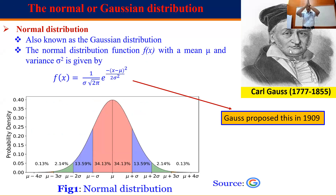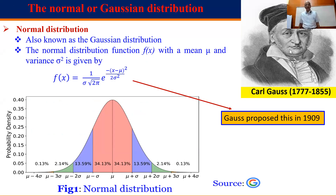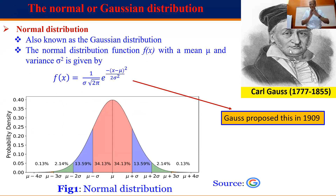This is the great Gauss — the normal distribution is also called the Gaussian distribution or the bell-shaped curve. Gauss lived from 1777 to 1855, a German professor who proposed this at the age of 32. Please note that 32 seems to be a magic number — Ramanujan lived 32 years, Adi Shankara too.